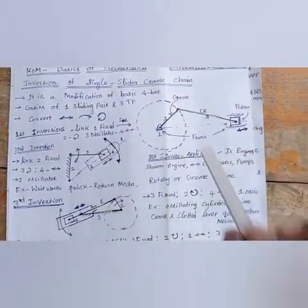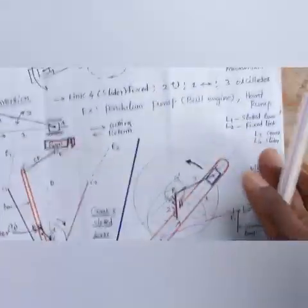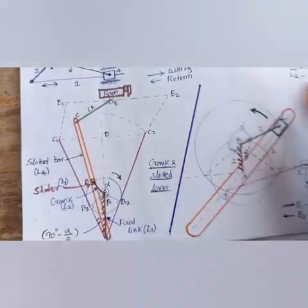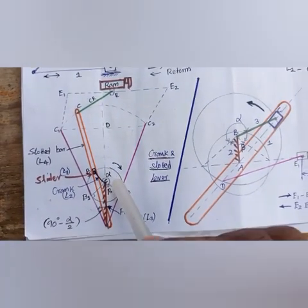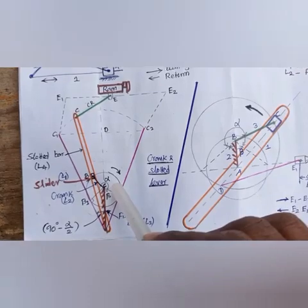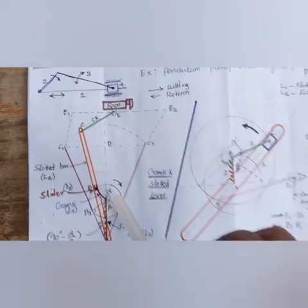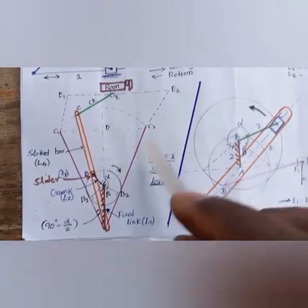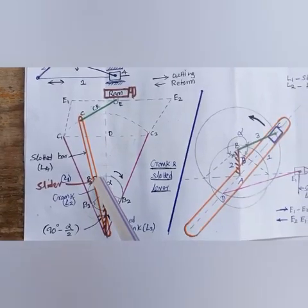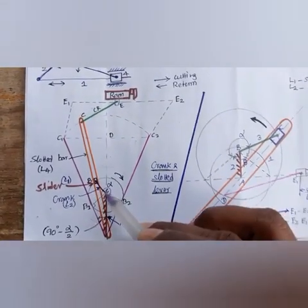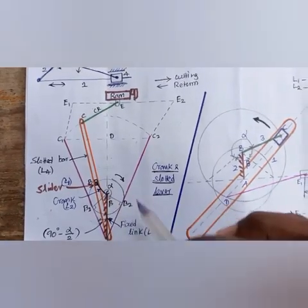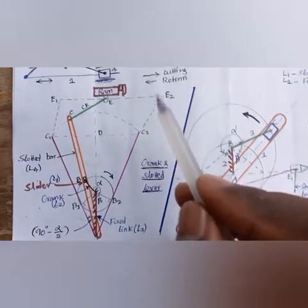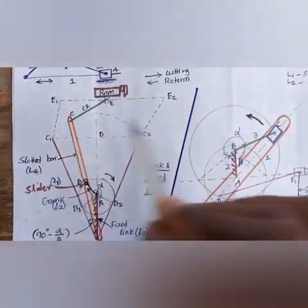Now the problem-based area. The crank and slotted lever mechanism is mainly used in shaping machines and slotting machines. Here is the ram, and here is the crank. Whenever the motor rotates, the crank rotates, then the oscillating slotted bar moves from E1 to E2.